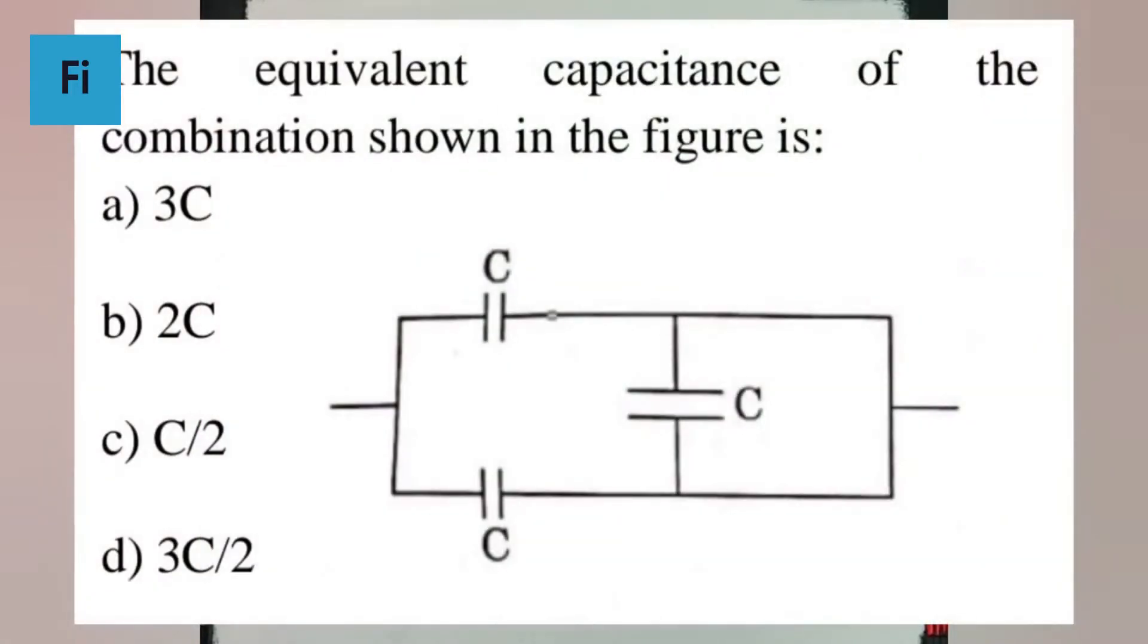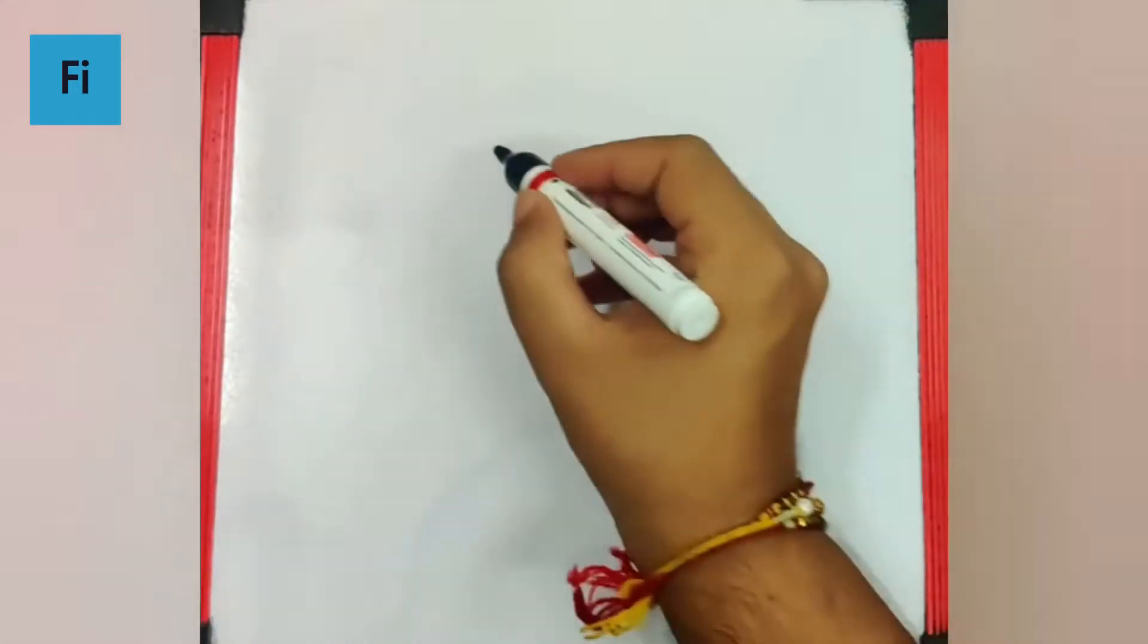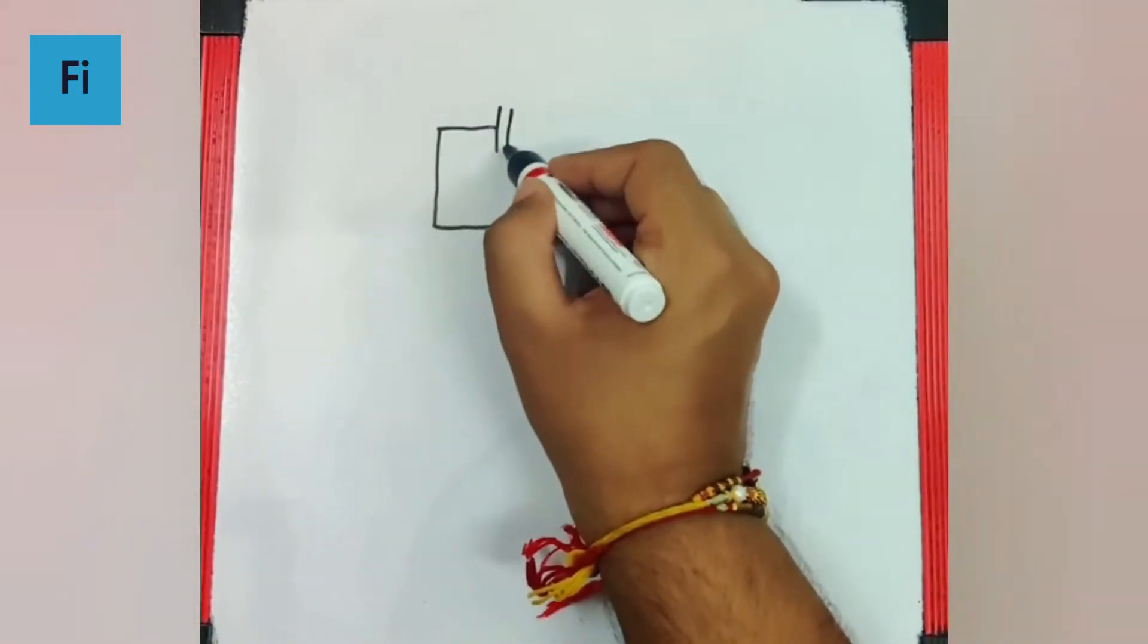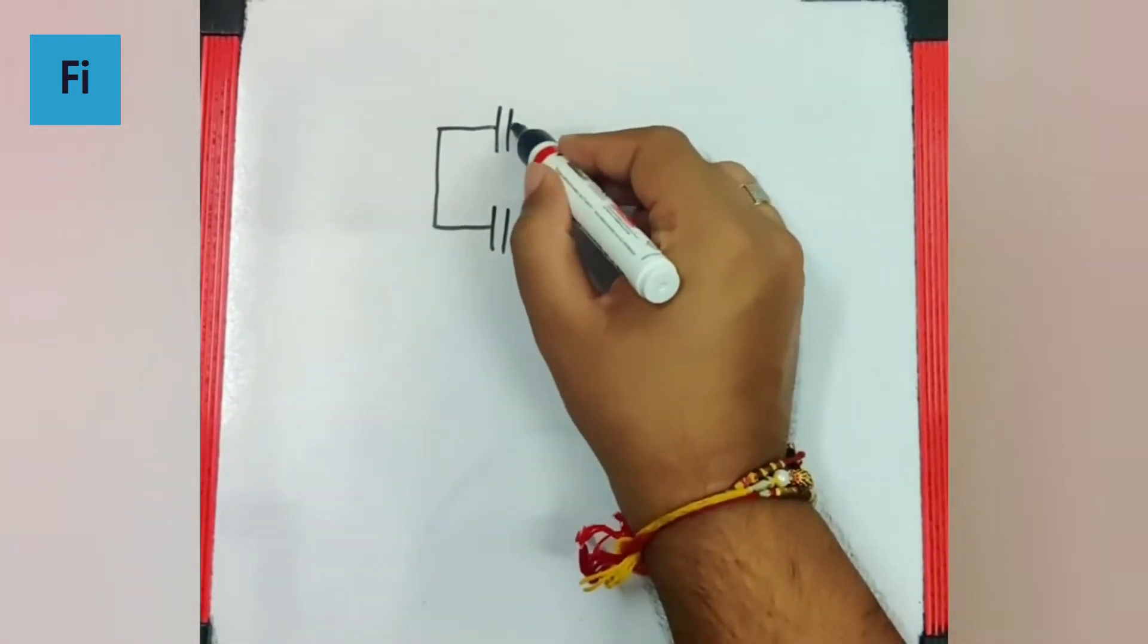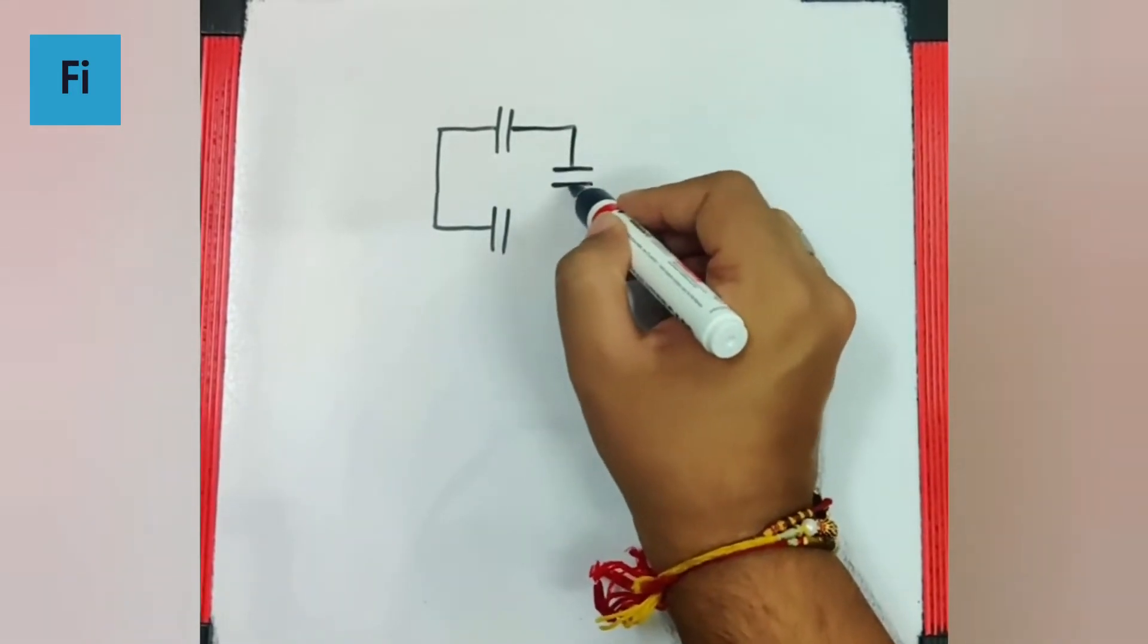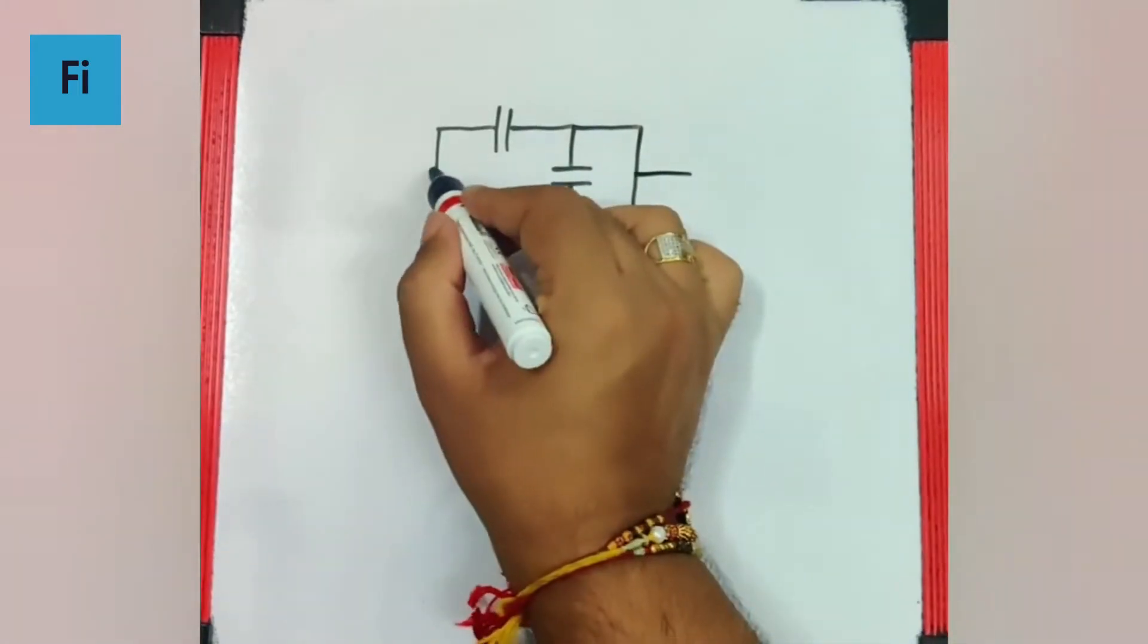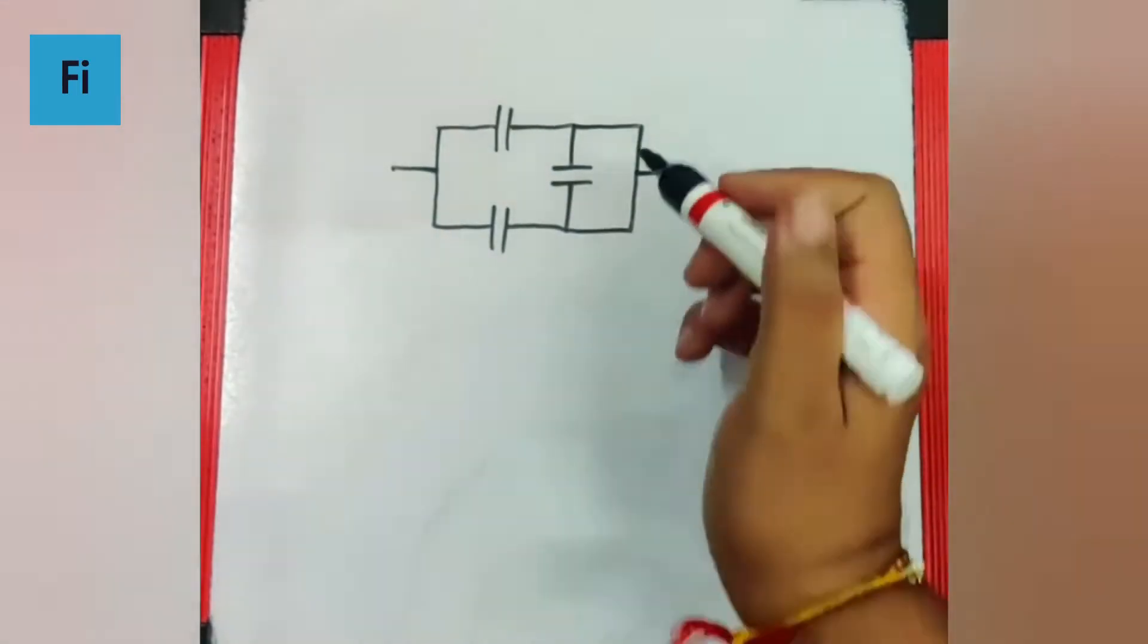The question asks for the equivalent capacitance of the combination shown in the figure. The combination shows two capacitors connected to this capacitor, and we have a connection like this. Now we have to understand the configuration.